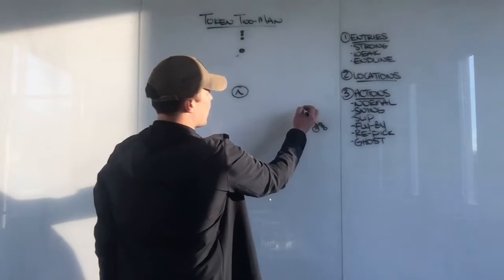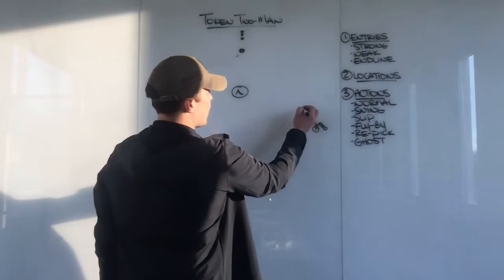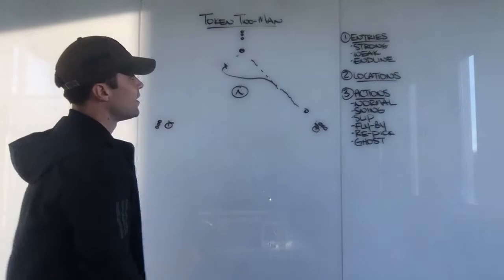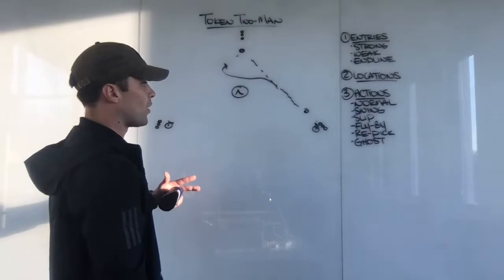We also have swing picks, where the ball carrier enters in, passes, and then swings to the opposite side. The ball carrier has his option of either using it, rejecting, decoying, using, or rejecting and then using it.